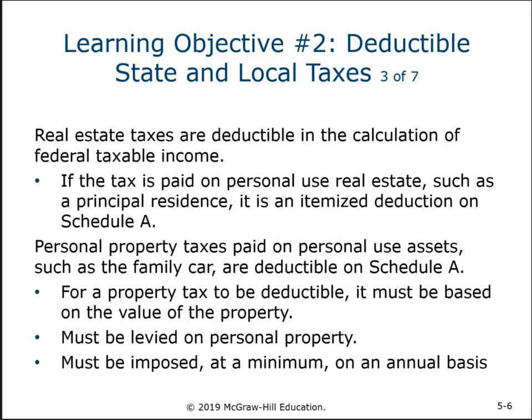Real estate taxes can be on as many properties as you own — it's not limited to one. You can own property in multiple states and pay taxes on all of them, and all of those can be added up. Most people just have their own home, but it could include others. Personal use asset taxes, like on your car, must be based on value to qualify.